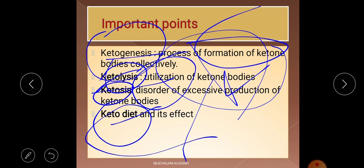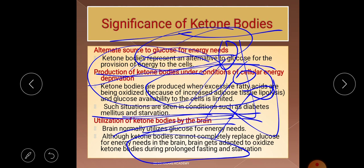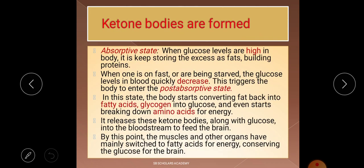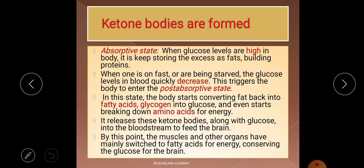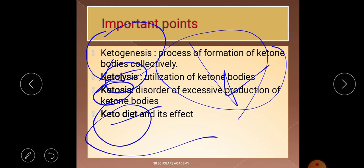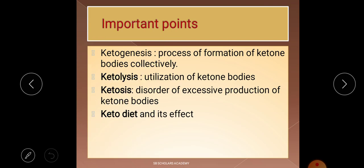From the examination point of view, the important topics covered in this video are: what are ketone bodies, what is ketogenesis, what is ketolysis, what is the significance of ketone bodies, the names of the three ketone bodies, and why they are important. These are the key points for NTA food and nutrition and home science — not a biochemistry exam.